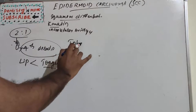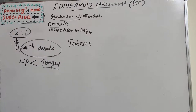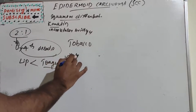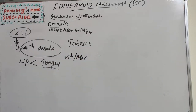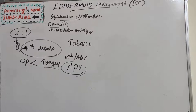Regarding etiology, tobacco in its various forms — especially smokeless tobacco — is the main cause, particularly when coupled with excess alcohol. High exposure to ultraviolet radiation is also a predisposing factor. Poor oral hygiene, diet with low levels of vitamin A and C, inadequate consumption of fruits and vegetables, immunosuppression, conditions like xeroderma pigmentosum, and human papillomavirus infection are also contributing etiological factors.